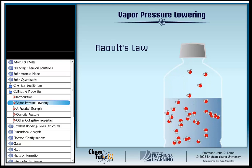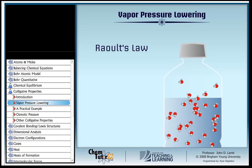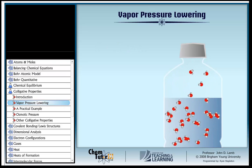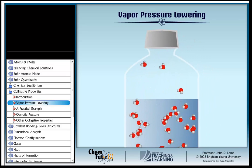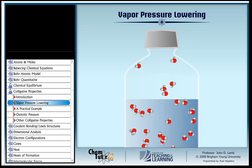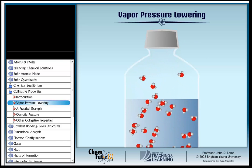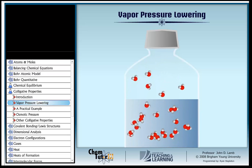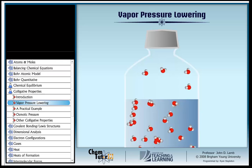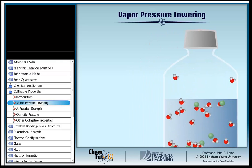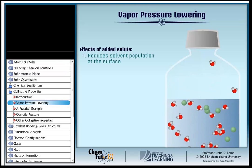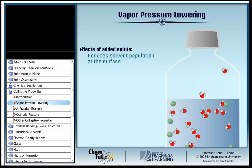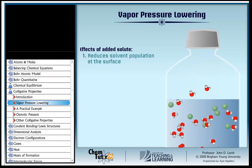Raoult's law is easy to remember if you consider the rationale behind it. Consider how a liquid evaporates: molecules in the liquid are in constant motion, and some have enough energy to jump up into the gas phase from the surface or near the surface of the liquid. If you add a solute to the liquid, that reduces the population of solvent molecules near the surface which can evaporate. Part of the surface of the solution is occupied by solute molecules. Hence, there are fewer solvent molecules in the gas phase, and the vapor pressure is lower.